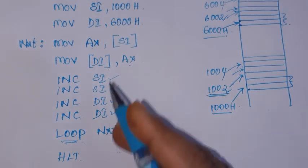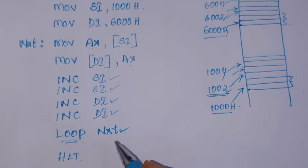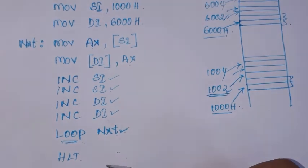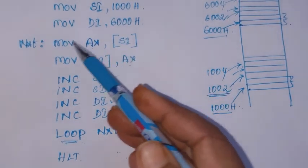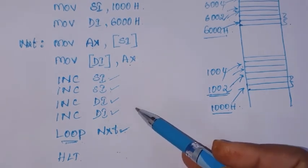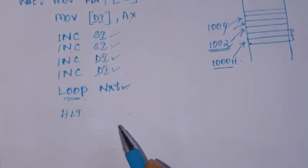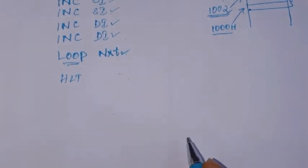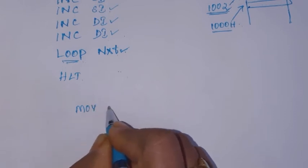There are specialized, more powerful string instructions - if you remember, we already discussed MOVSB (move string byte) and MOVSW (move string word). Using those instructions, this same program can be written with fewer instructions. You can replace all these instructions with a single instruction. Since it is a word transfer here, we use the MOVSW instruction.